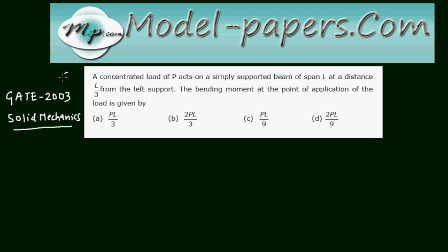Let us see the problem statement. A concentrated load P acts on a simply supported beam of span L at a distance L/3 from the left support. The bending moment at the point of application of the load is given by — there are 4 choices given below.